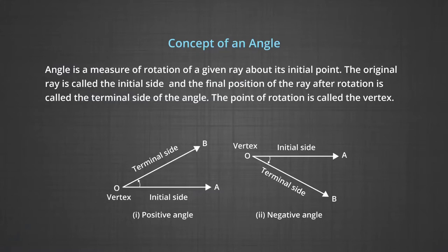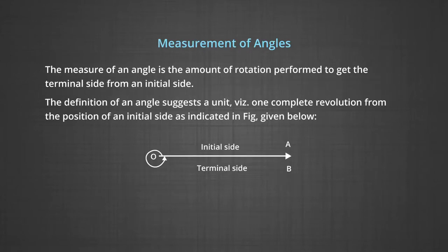We will study the relationship between L, theta and R, where L is the length of an arc, R is the radius of the circle and theta is the angle subtended by the arc at the centre of the circle. Let us understand the concept of an angle. An angle is the measure of rotation of a given ray about its initial point. The original ray is called the initial side and the final position of the ray after rotation is called the terminal side of the angle. The point of rotation is called the vertex.